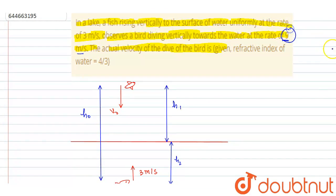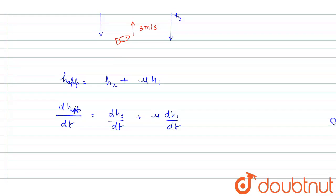So this h_apparent is decreasing with 9 meters per second, and the fish itself is moving with a velocity of 3 meters per second, so it will be minus 3.